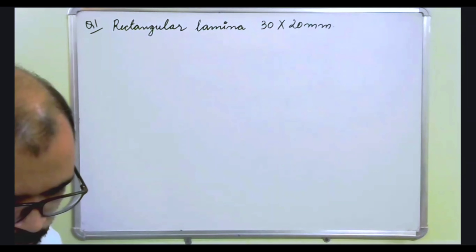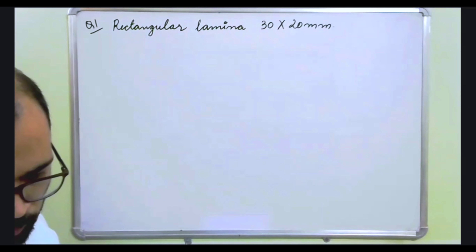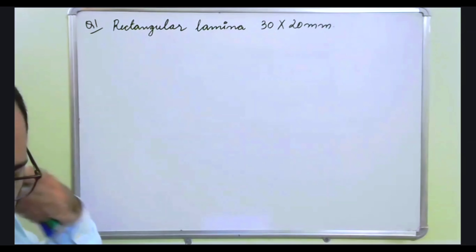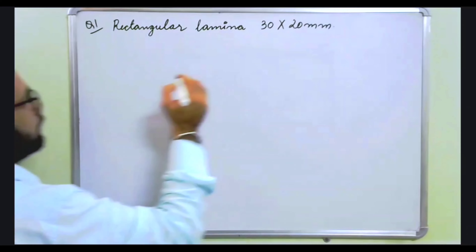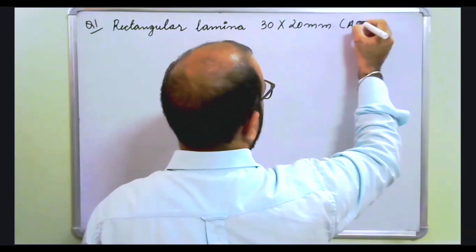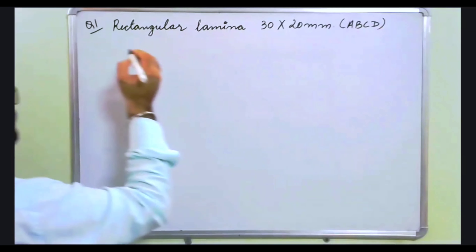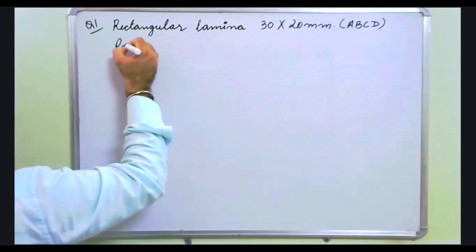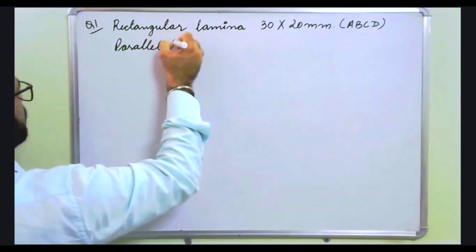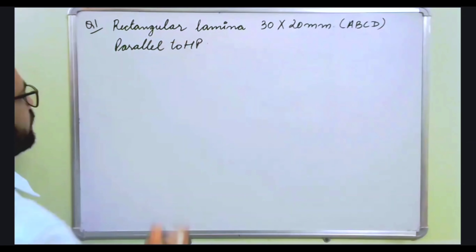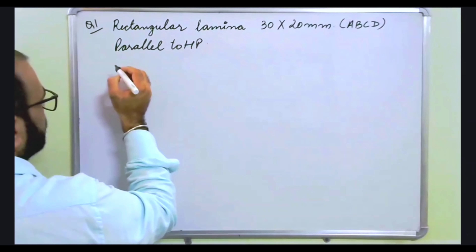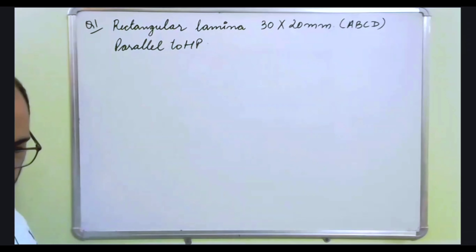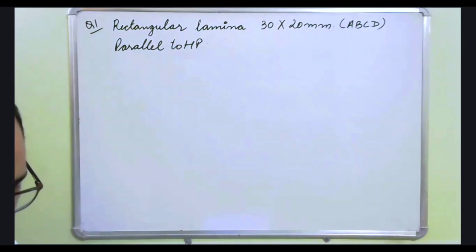In the question it is given that this rectangular lamina ABCD is parallel to HP. Obviously if it is parallel to HP it will be perpendicular to VP. Third, it is given that the shorter side AB is perpendicular to VP.